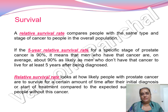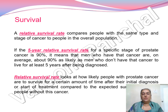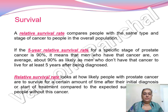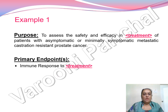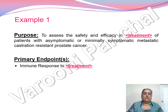The relative survival rate looks at how likely people with prostate cancer are to survive for a certain amount of time after their initial diagnosis or start of treatment, compared to the expected survival of similar people without this cancer. Bar charts are typically used to show the stage-wise five-year relative survival rate for this disease.